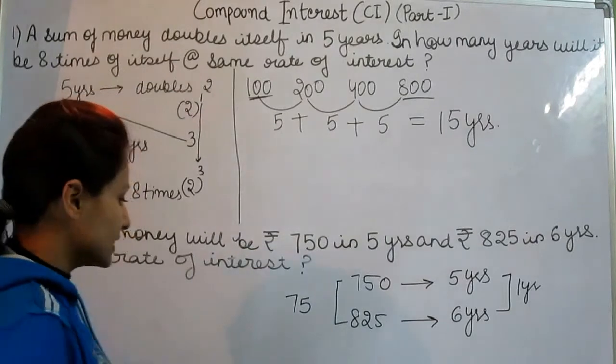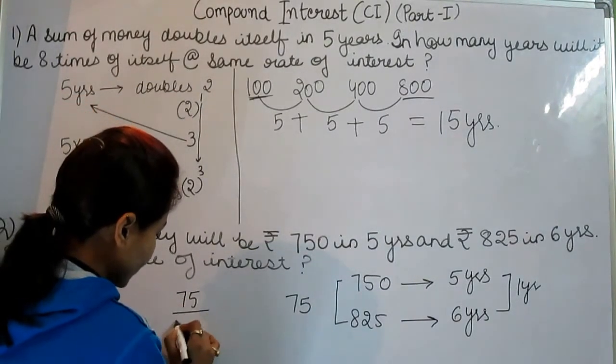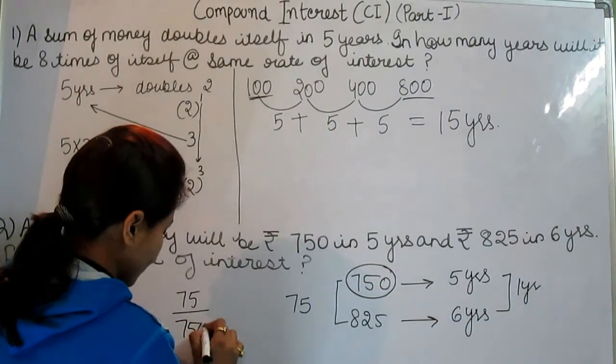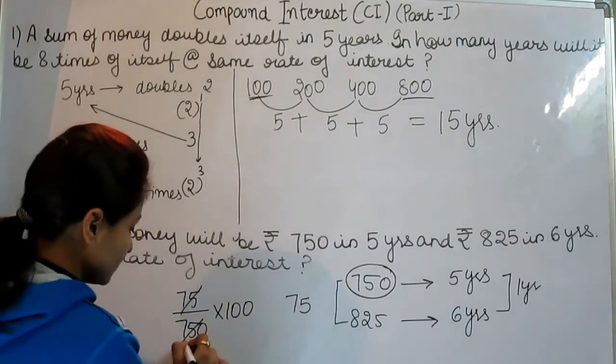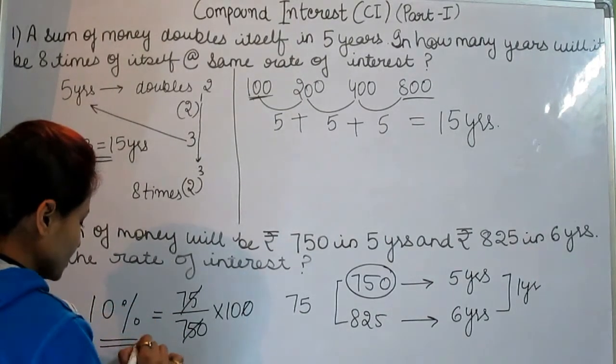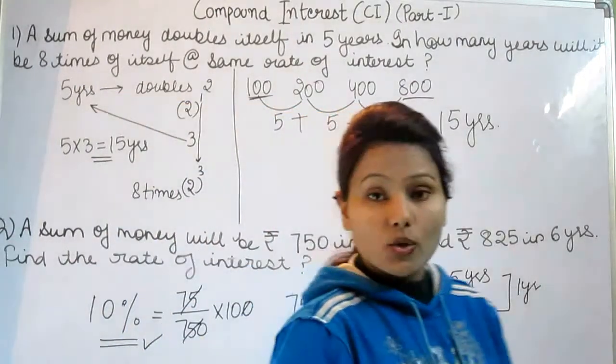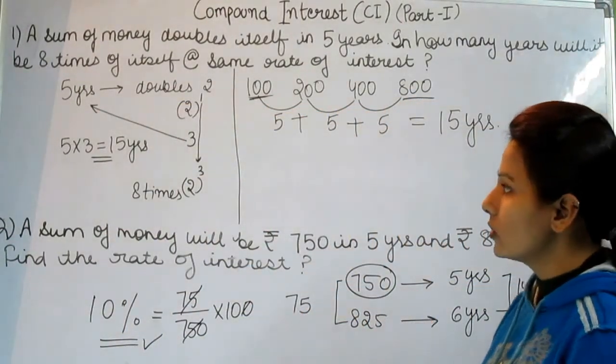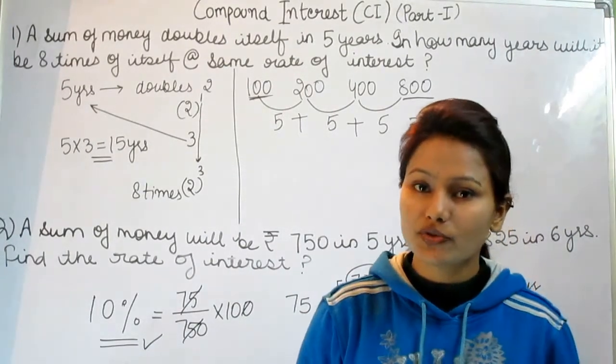And the gap is if we subtract 750 from 825 we get 75. So simply what we have to do, we just need to do 75 divided by 750 into 100. And when we solve this equation we get 10 percent. And 10 percent is the rate of interest which we were asked. So it was compound interest part 1. These two problems are very important in simple interest and compound interest as well.